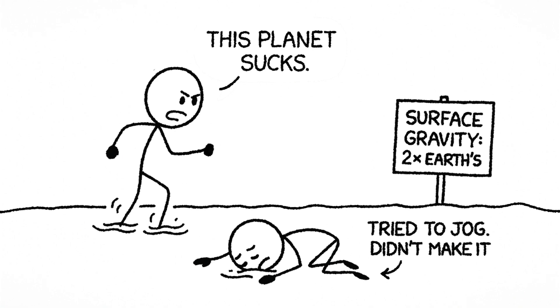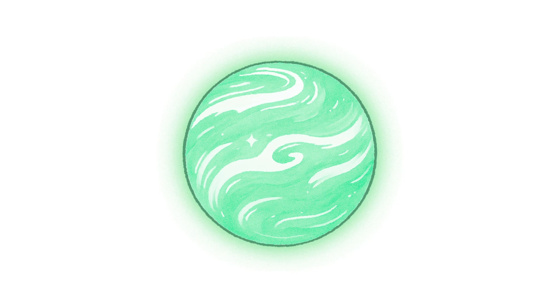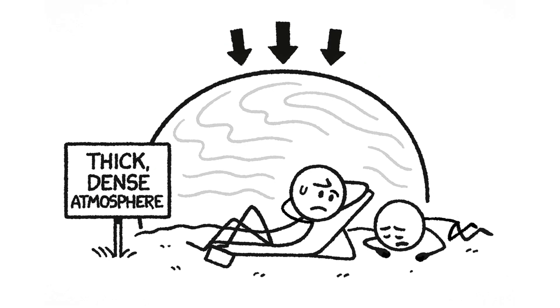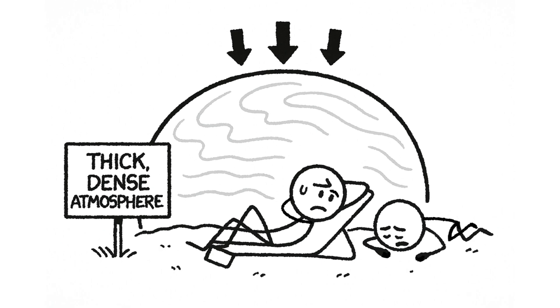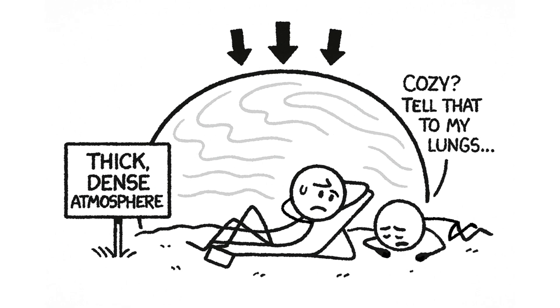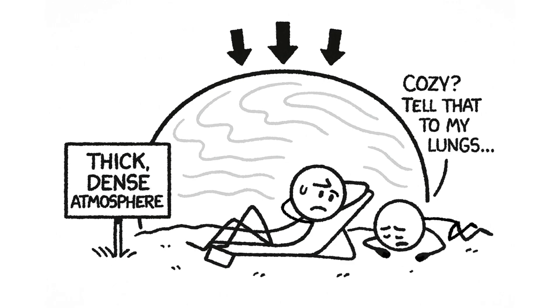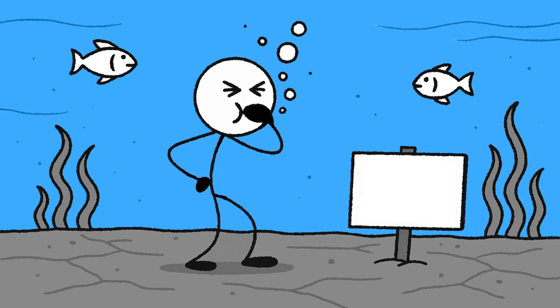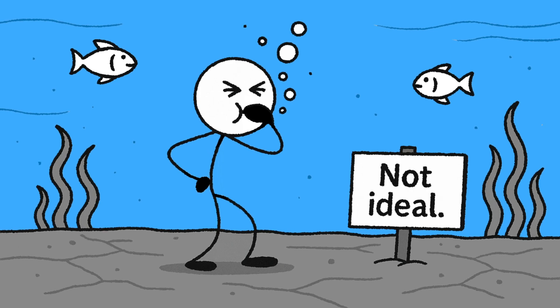We haven't talked about the air yet. Thanks to its size, scientists suspect Kepler-22b might be wrapped in a thick, dense atmosphere, the planetary equivalent of a weighted blanket. Sounds cozy, but it comes with a catch: extreme surface pressure. Imagine standing at the bottom of Earth's ocean. Now take away the scuba gear. Not ideal.